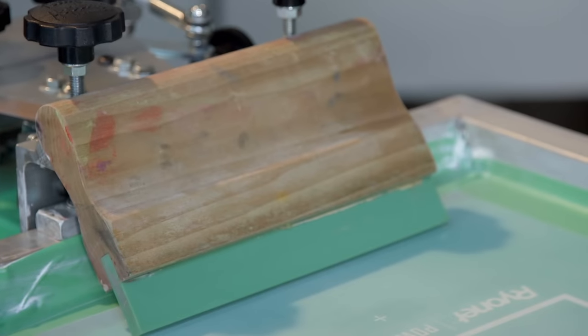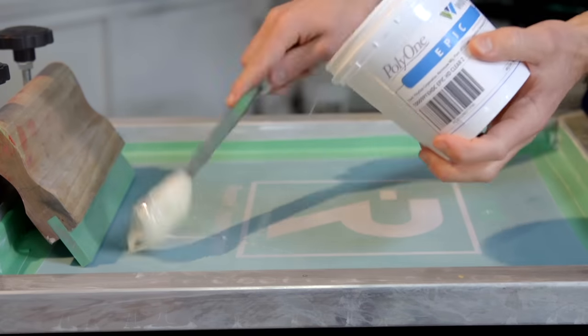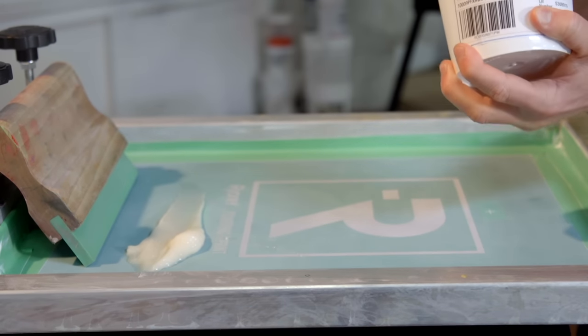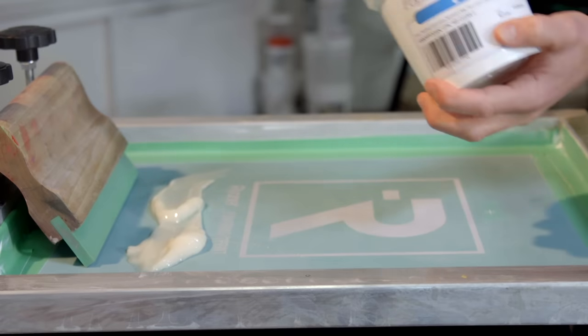We want to use a 70-80 durometer blade or a triple durometer blade to control this slightly thicker ink. Prior to printing, we load the ink into the stencil using a heavy load pass with a medium squeegee pressure and angle.